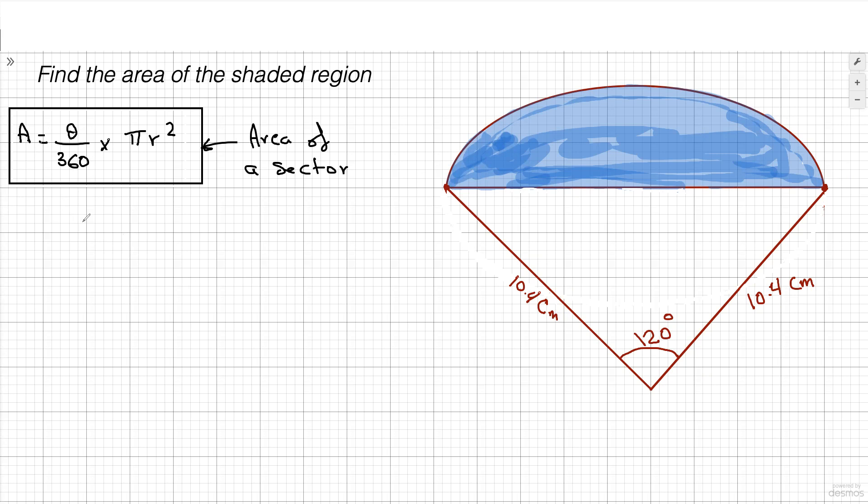So let's find out the area of that first. So the area of the sector equals 120 over 360 times pi times 10.4, which is the radius squared, which equals, see this would cancel, that's 1, that's 3. You don't need to do all of that. You could just plug it into your calculator. And that gives us 113.3 to 1 decimal.